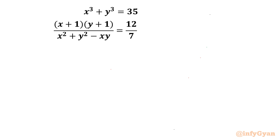Welcome back to Infigyan, my dear friends. In this video we have one very interesting system of equations: x³ + y³ = 35, and (x+1)(y+1) divided by (x² + y² - xy) = 12/7. We have to find real x and y.